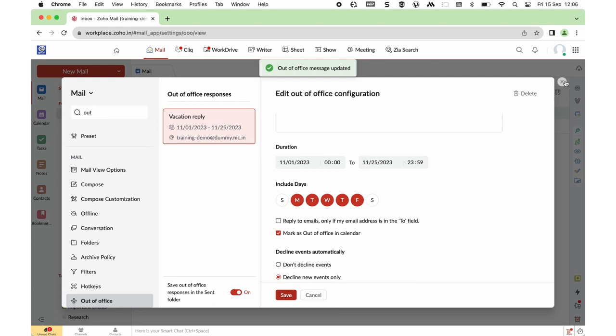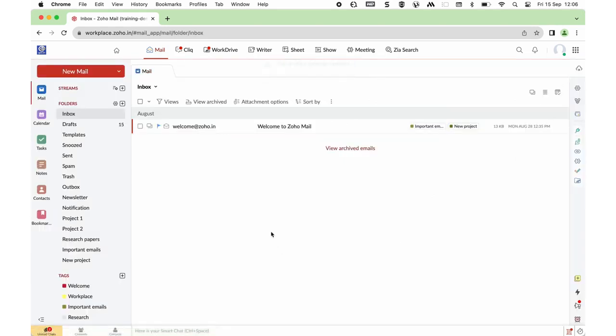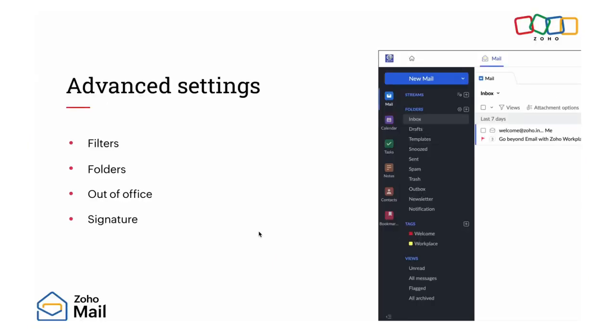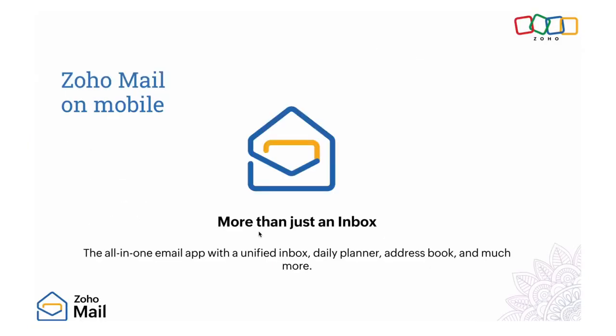Under this topic, we covered Filters, Folders, Out of Office, and Signature. The final topic for today is how you can make use of the Zoho Mail mobile app.